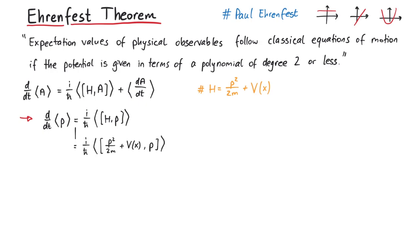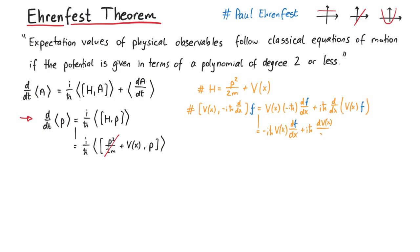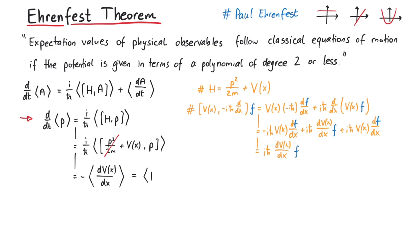Since we can write the momentum operator in quantum mechanics as a derivative, we must include a dummy function f here, which we remove later on. Otherwise, we would miss out on the effect of the product rule due to the derivative. The result of this commutator is i h-bar times the derivative of the potential. This means the time derivative of the expectation value of the momentum operator is given by the negative expectation value of the gradient of the potential, which we can identify as a force.